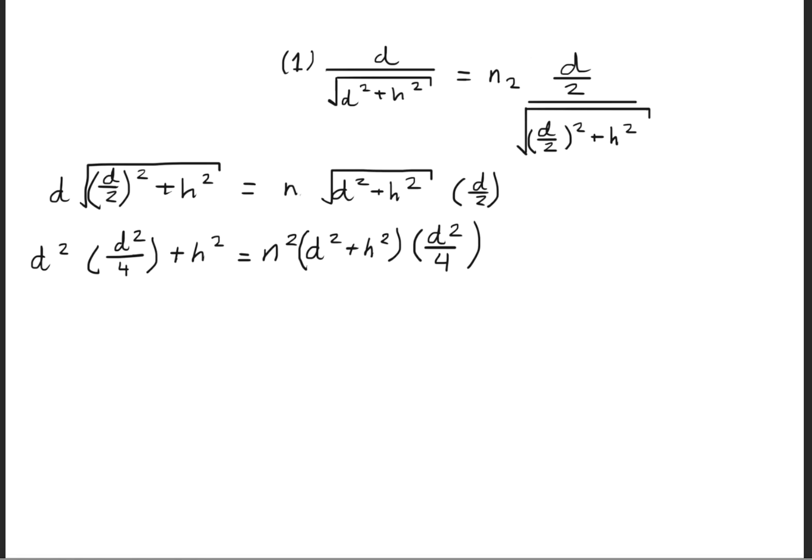Next, we'll go ahead and take the square on both sides so that we get d squared times d squared over 4 plus h squared, which is equal to n squared times d squared plus h squared times d squared over 4. What we can go ahead and do now is cancel those d squares, and at the same time, we'll multiply everything by 4.